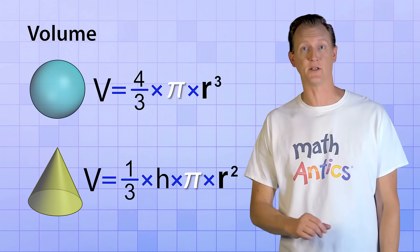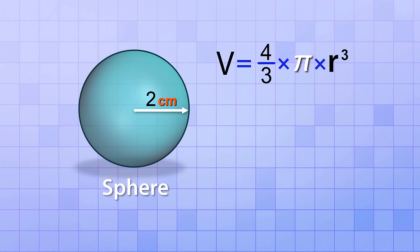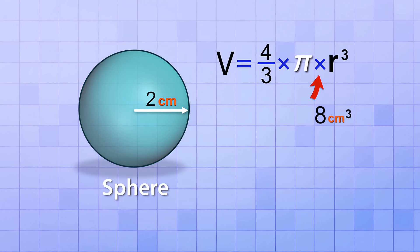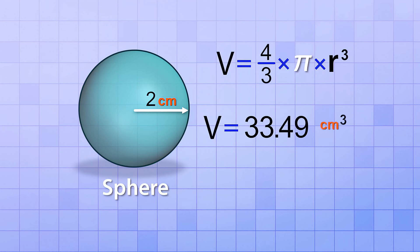Here's a sphere with a radius of 2 cm. Using the formula volume equals four thirds times pi times radius cubed: we cube the radius, so 2 cm times 2 cm times 2 cm equals 8 cm cubed. Then we multiply by pi: 3.14 times 8 is 25.12. Finally, we multiply by four thirds — which is multiplying by 4 then dividing by 3 — giving us a volume of approximately 33.49 cm cubed.